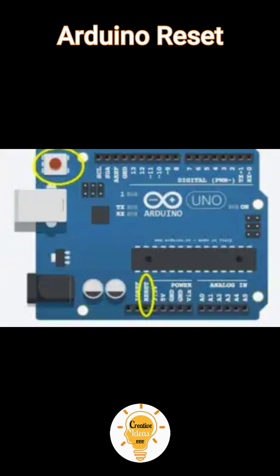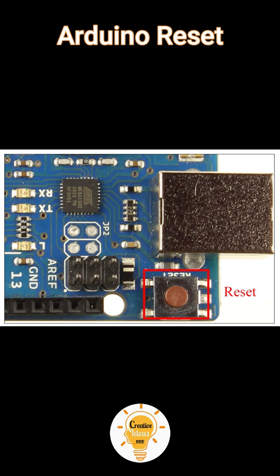Arduino Reset: You can reset your Arduino board to start your program from the beginning. You can reset the UNO board in two ways: first, by using the reset button on the board; second, you can connect an external reset button to the Arduino pin labeled Reset.